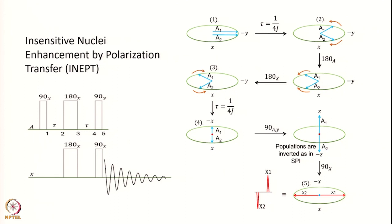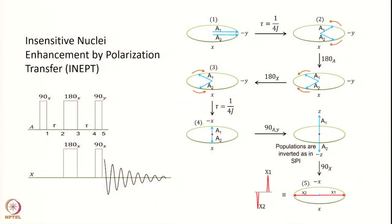The experiment is quite well described. I will go through it step-wise and we will use the principle of SPI here as well. I will explain where we use this. The pulse sequence goes like this — this is called Insensitive Nuclei Enhancement by Polarization Transfer, or in short, INEPT.